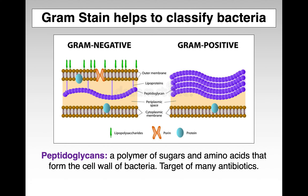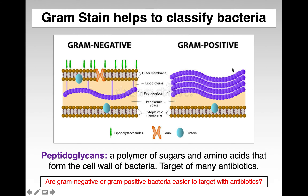Gram stain is what helps classify different bacteria. You can have the peptidoglycan cell wall either be under an outer membrane or exposed to the environment. Peptidoglycan is a polymer of sugars and amino acids that forms the cell wall of bacteria and is a target for many antibiotics. Gram positive bacteria have peptidoglycan exposed to the environment, which is much easier to treat with antibiotics.